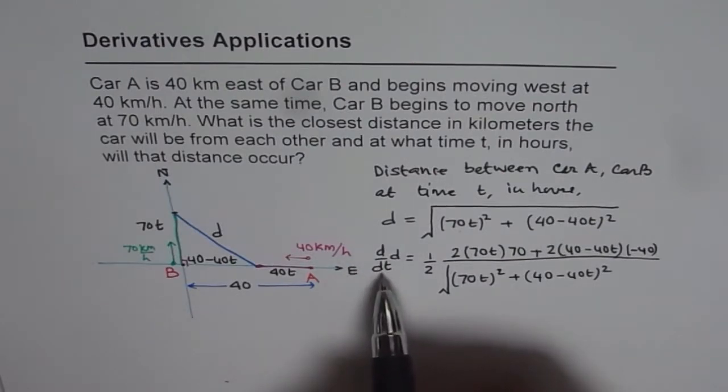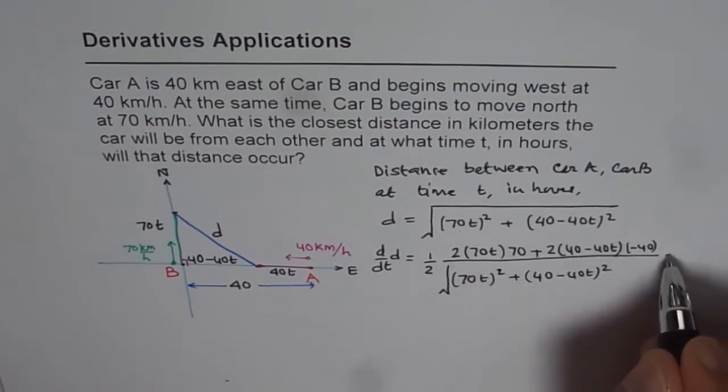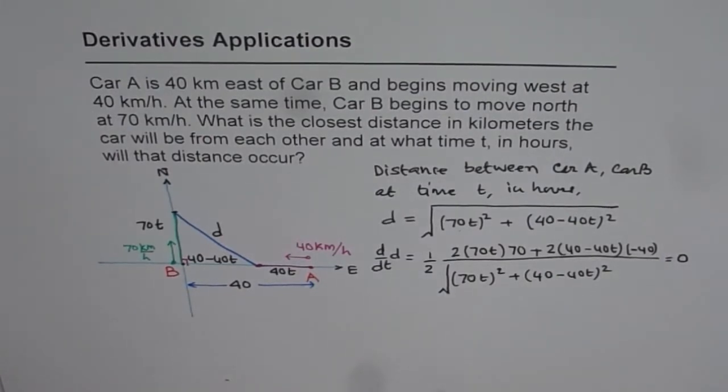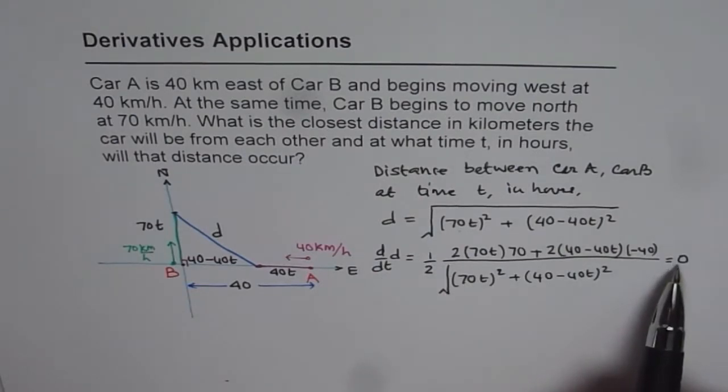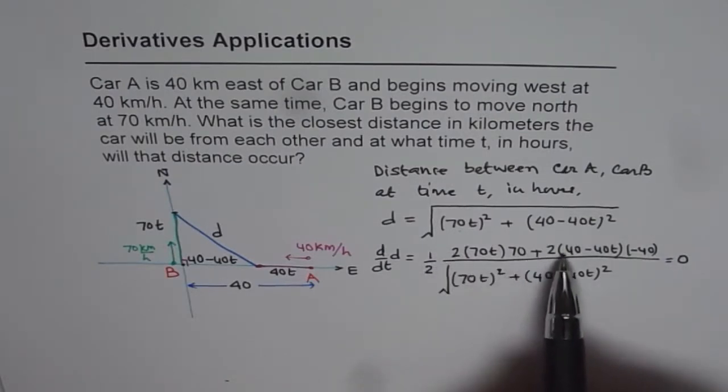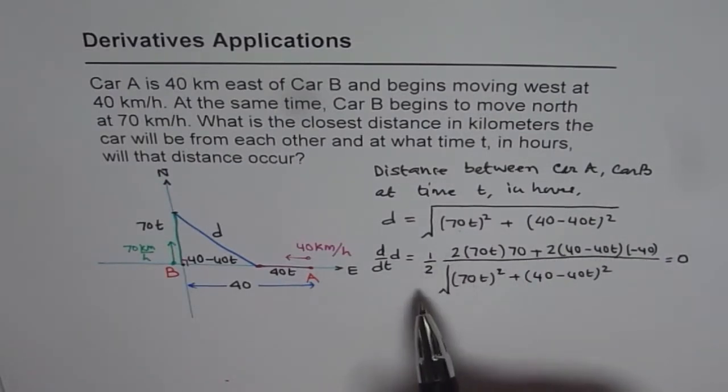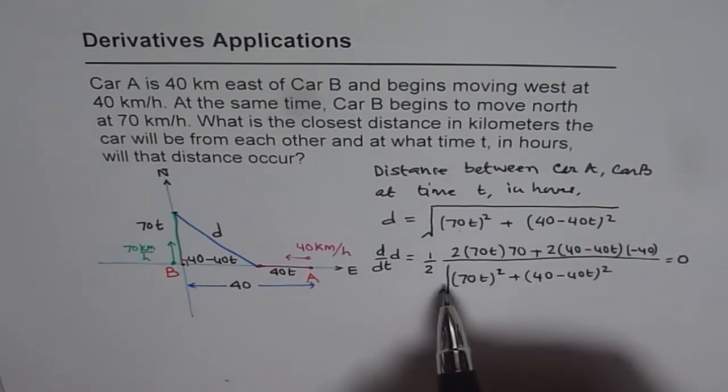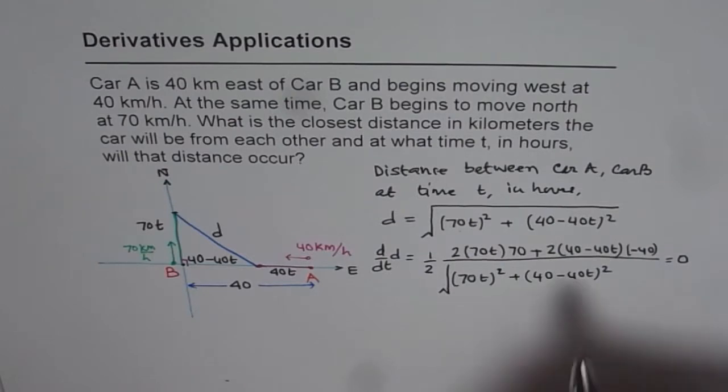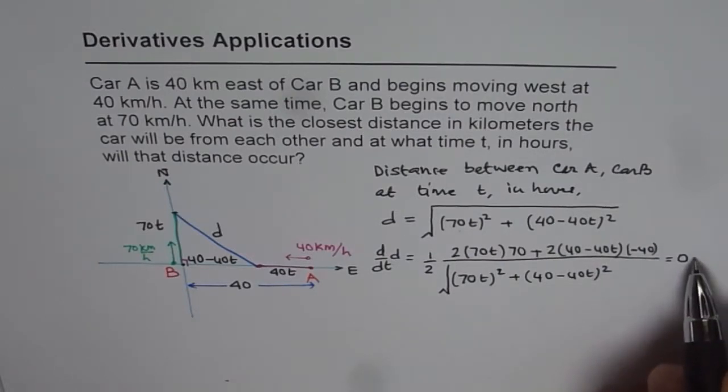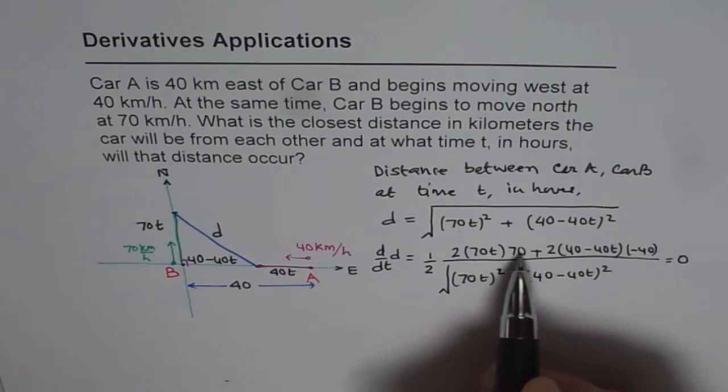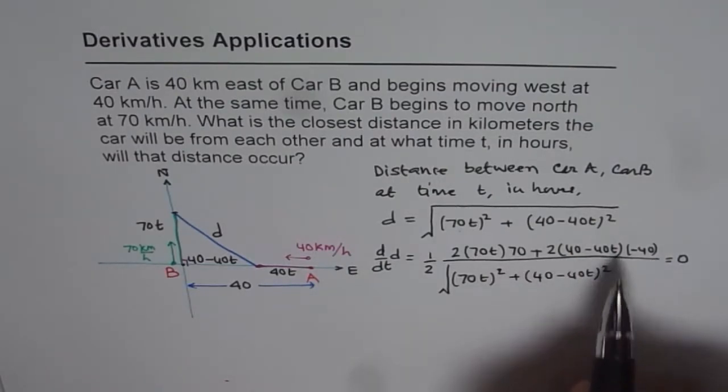So that becomes the derivative. So dD/dT is equals to all this. For maximum or minimum, what should you do? Well, this should be 0. Equate it to 0 for maximum or minimum. So we need maximum or minimum. Now, when will this be 0? When the numerator is 0. So you can simplify the numerator and solve for T. So 2 and 2 will cancel out, even otherwise, the factor and denominator doesn't really play the role because when you cross multiply, it becomes 0. So you are basically left with the numerator here, which you need to equate to 0 and find T.